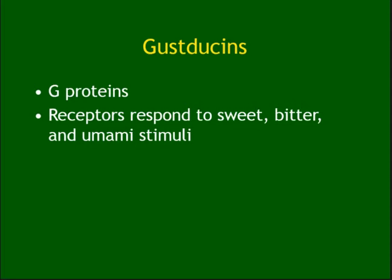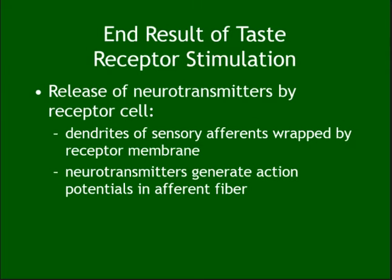Gustducin is a G-protein that responds to sweet, bitter, and umami. So what is gustducin? It is a G-protein — a messenger that is used to respond to these taste sensations.